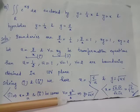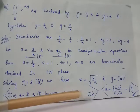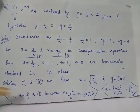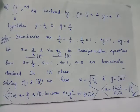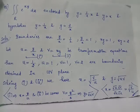Thus we obtain y = √(uv). Substituting y = √(uv) into the expression for x gives x = √(v/u). So we have x = √(v/u) and y = √(uv).